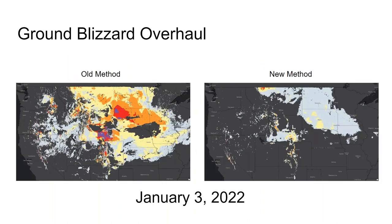Here's an example from a storm on January 3rd, 2022, comparing the old method to the new method. You can see it scours out a lot of the spurious data — a lot of that had to do with the temperature data coming from the snow. The footprint is greatly reduced, which is a function of the higher wind speed threshold.